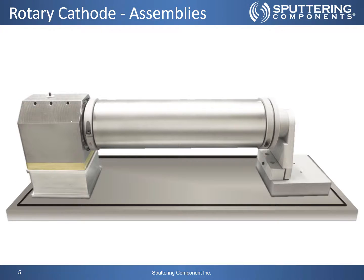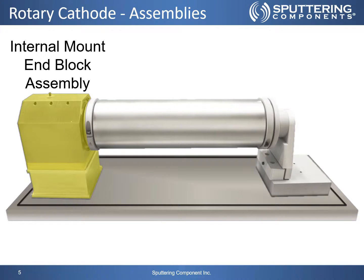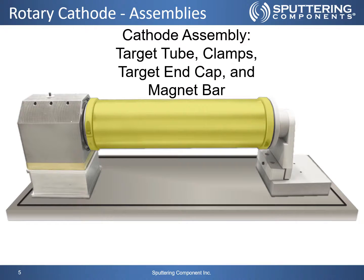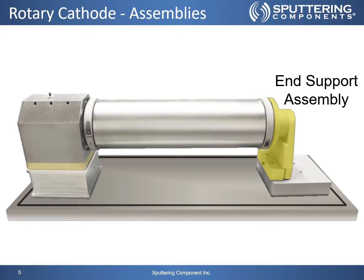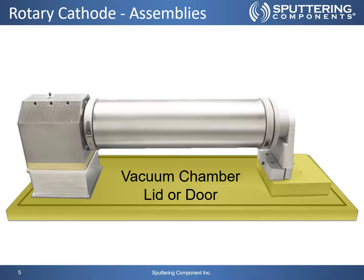Rotary cathodes are composed of several key assemblies. This internal mount rotary cathode is composed of the internal mount and block assembly, the cathode assembly — which comprises the target tube clamps, target end cap, and magnet bar which is held inside the target tube — the end support assembly, and lastly all of these assemblies are mounted to the vacuum chamber lid or door.